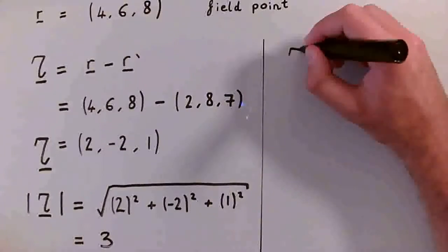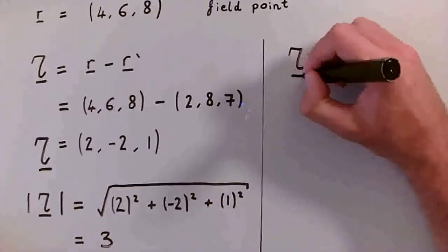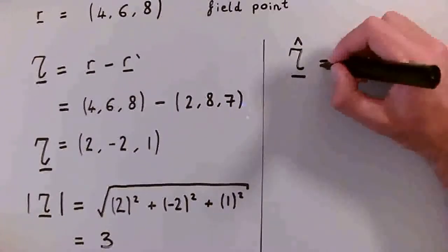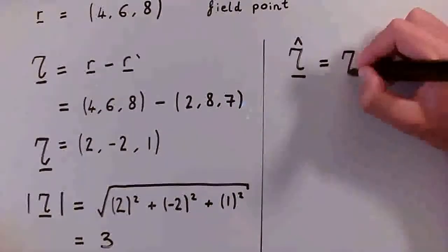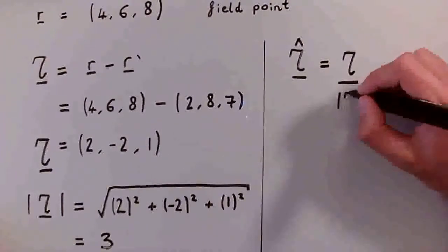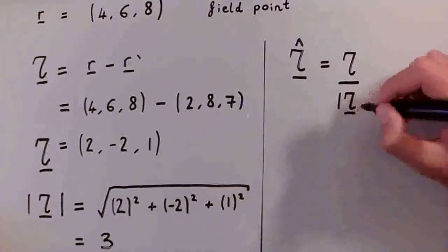So the way we work this out, we add a hat to this to show that it's a unit vector. And this is just equal to the vector itself divided by the magnitude of the separation vector.